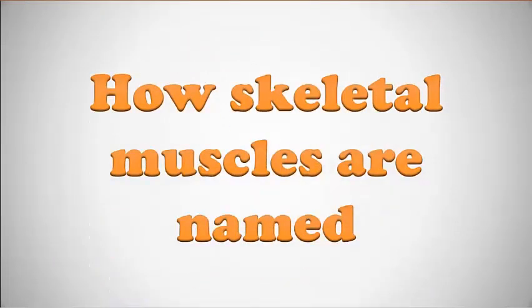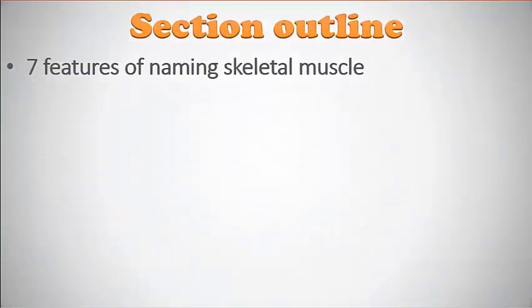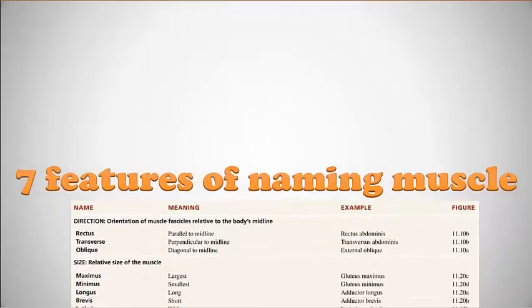Seven features are used to name skeletal muscles. Understanding a muscle's name can reveal its origin, insertion, or movement. The features include direction, size, shape, action, origin, location, and origin-insertion.